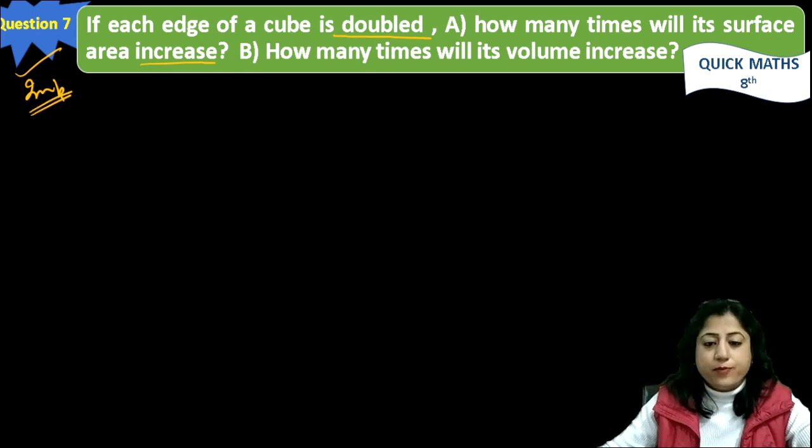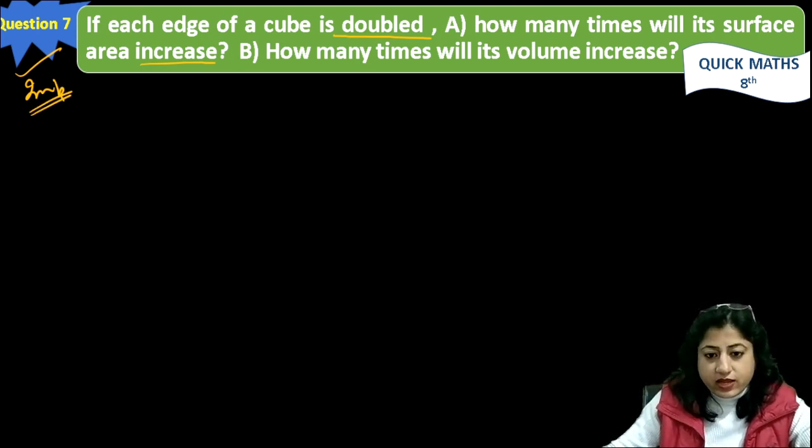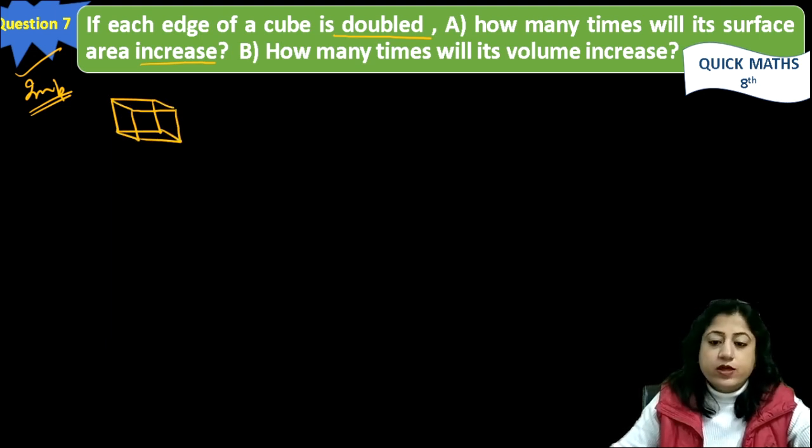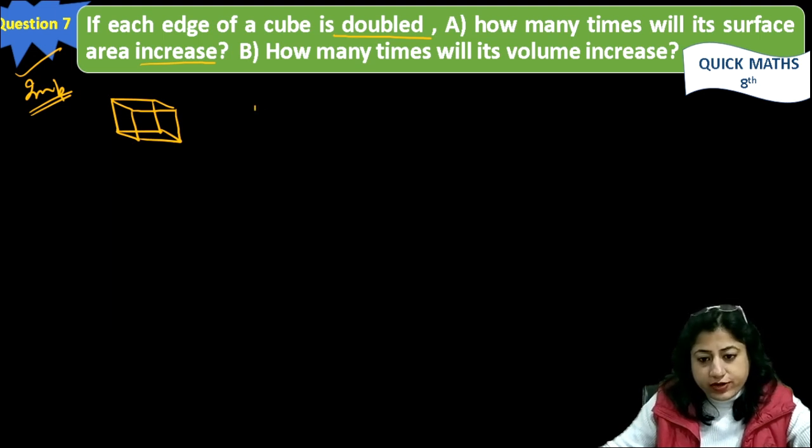First mark it as important. Now, he is asking if each edge of cube is doubled, suppose this is the cube. Cube means all the sides are of equal length, then this will become a cube. So first this is original cube and this is the new cube.